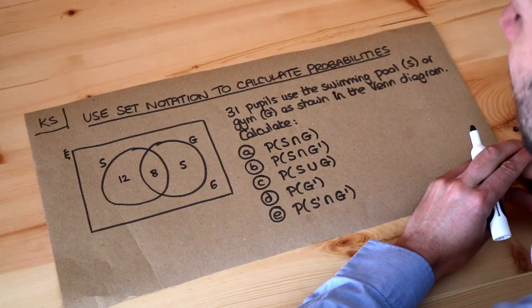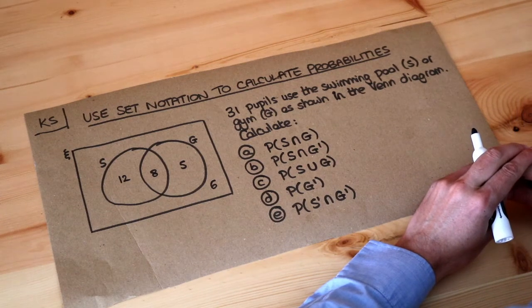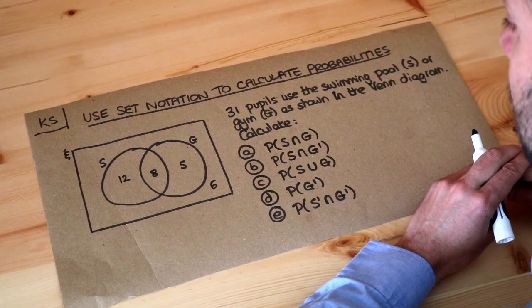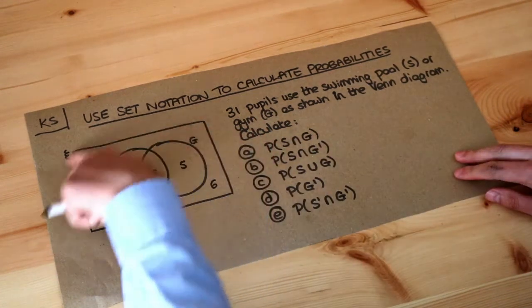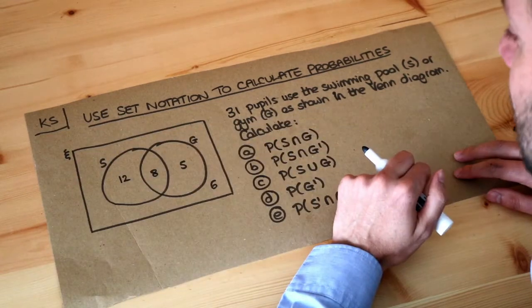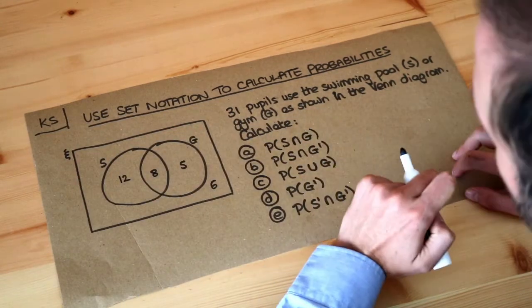Hello and welcome to this Dr Ross Maths key skill video on using set notation to calculate probabilities. In previous videos we explored Venn diagrams. A Venn diagram is just a visual way of representing sets, and a set is just a collection of items.